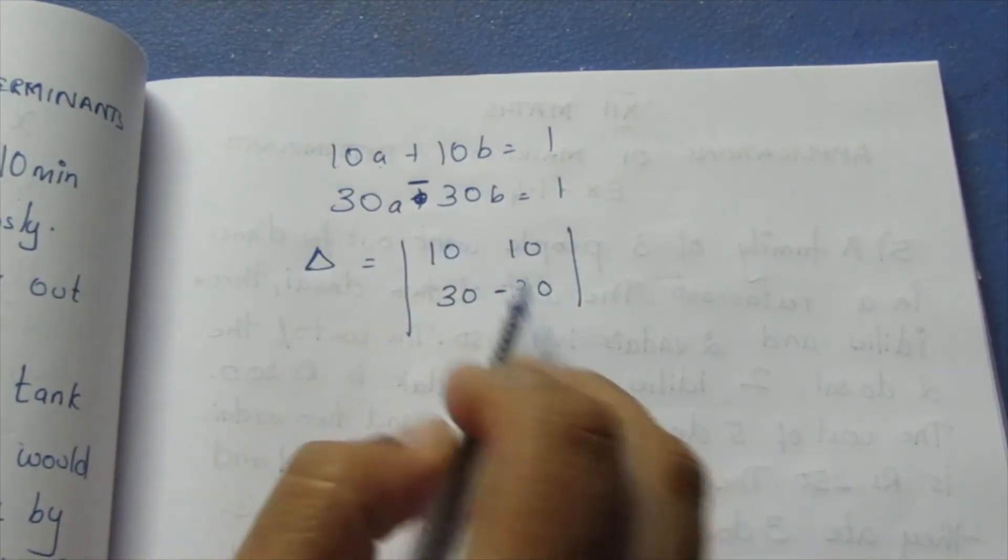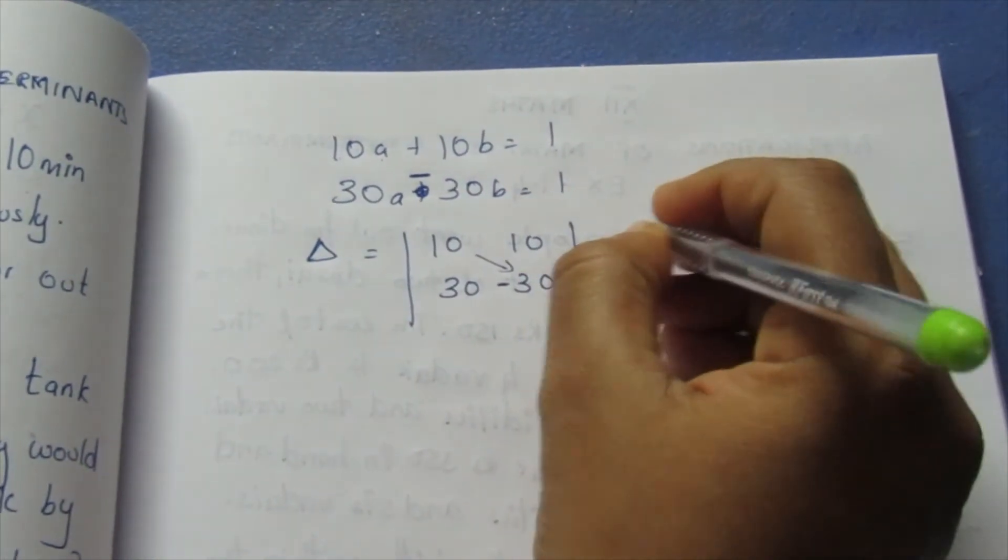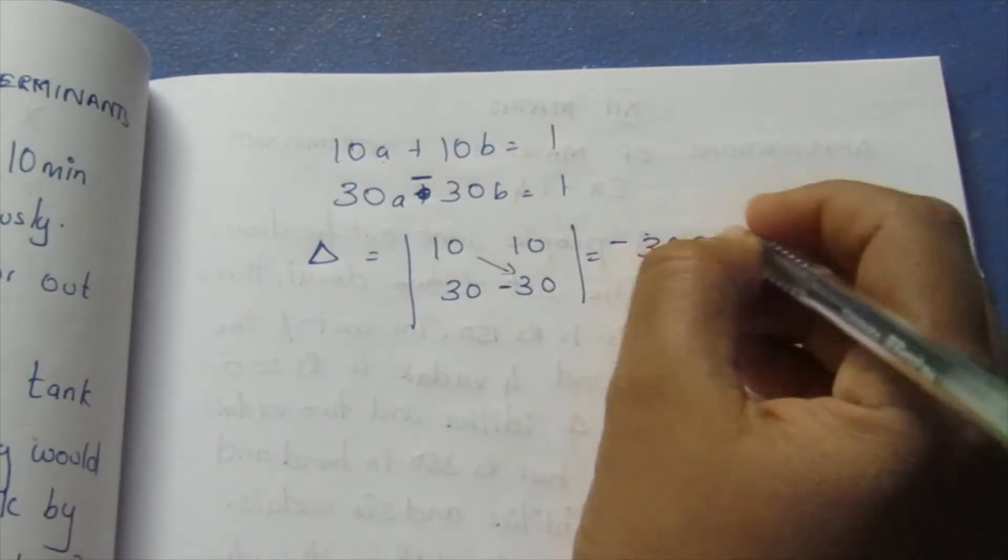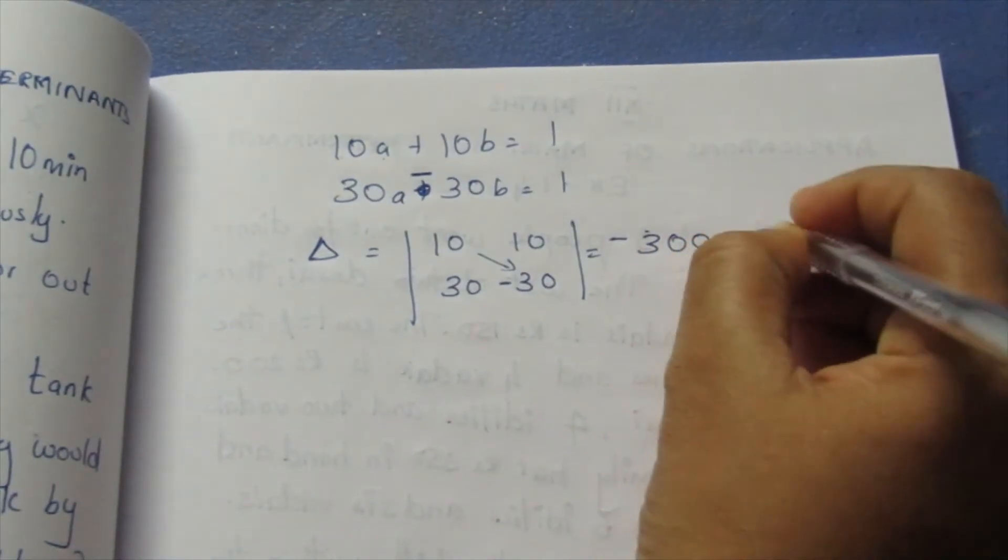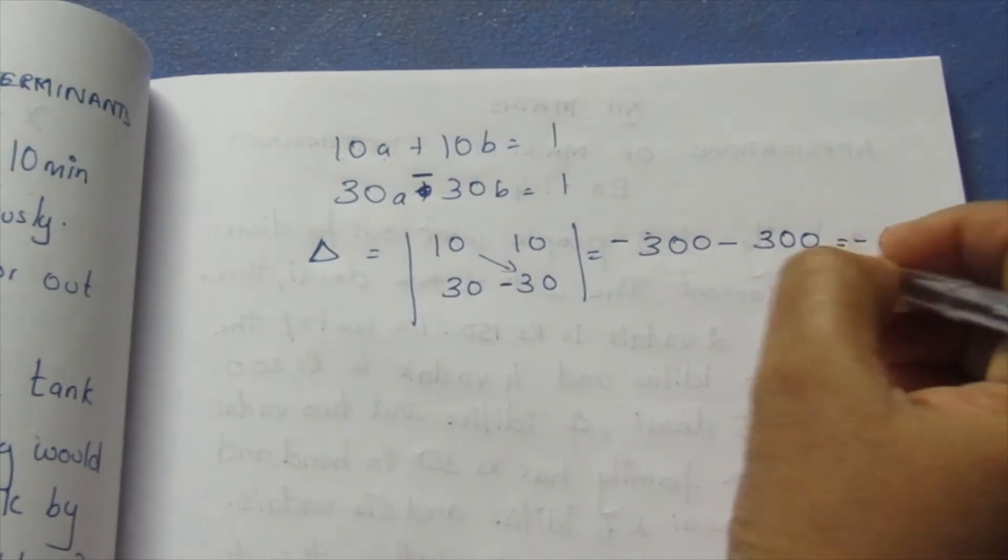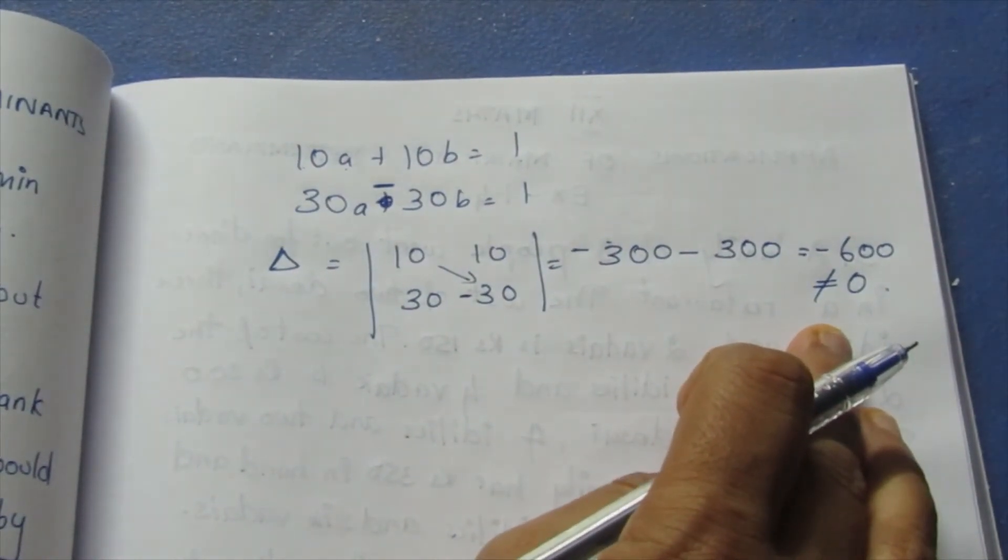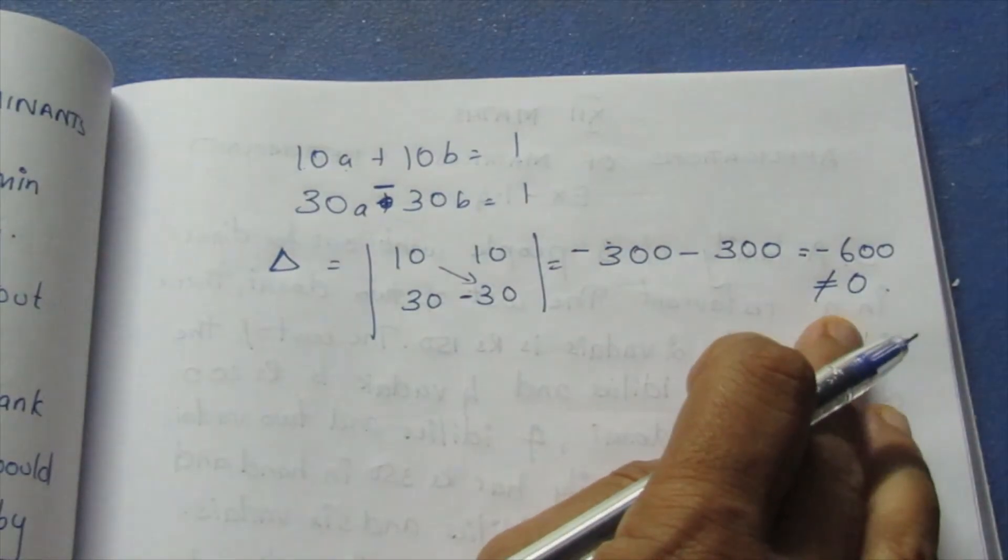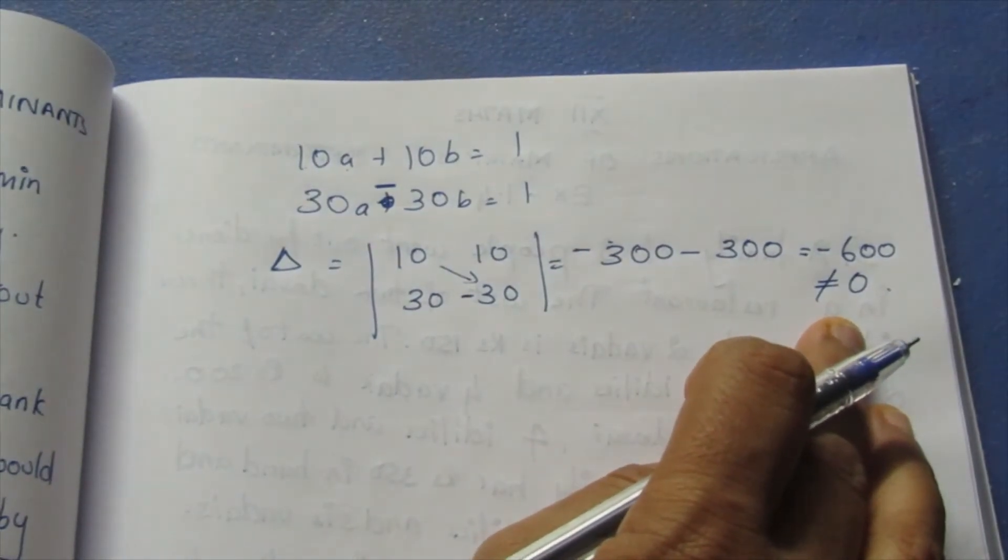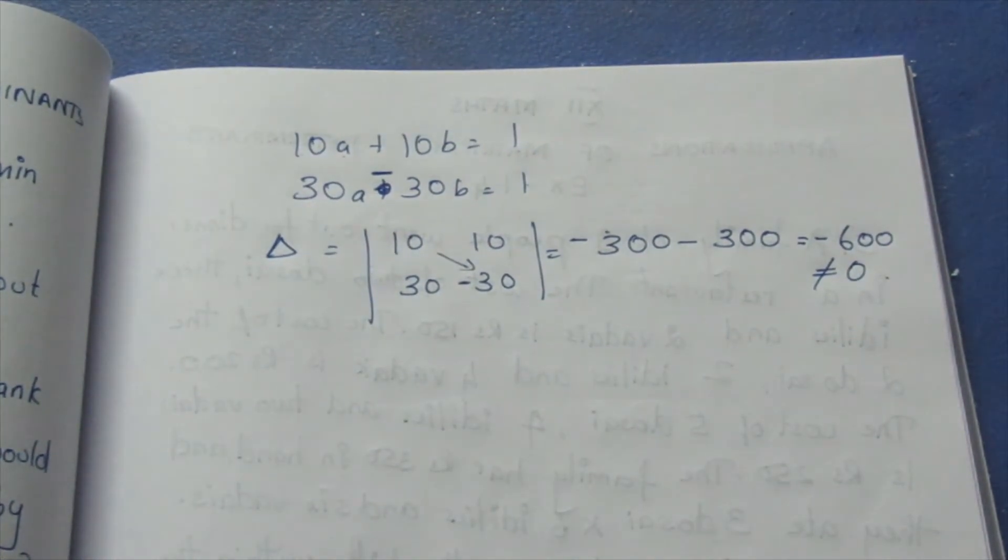The determinant is 10 times minus 30 minus 10 times 30, which equals minus 300 minus 300, equal to minus 600, which is not equal to 0. Since the determinant is not 0, we can find the values.